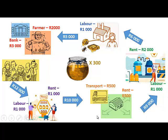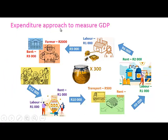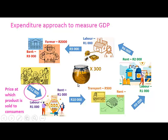We are now going to see how the production chain can be used to explain the different approaches to calculating GDP. Using the expenditure approach, we only consider the value paid by the consumers. So the price at which the product is sold to consumers is added to GDP. If this honey is all that was produced in this economy, the value of GDP is equal to 12,000 rand.